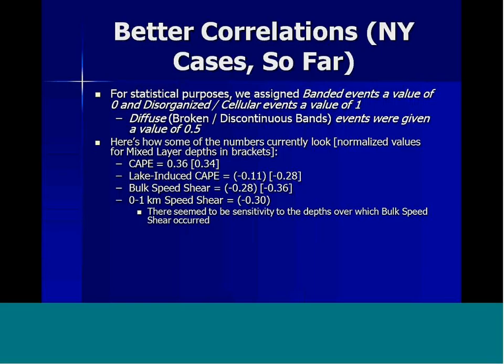For the results, we did statistical correlations of certain parameters to the radar presentation, where I quantitatively defined whether it was a well-defined band, a broken diffuse-looking band, or out-and-out open cellular snow showers. Cape over the land surface — the more unstable over the land — seemed to lend itself more to open cellular snow shower activity. Not a surprising finding.